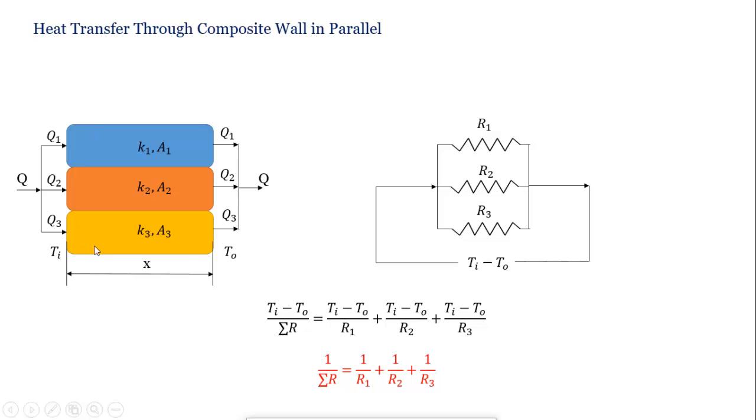When we have walls in parallel then we use this type of equation: 1 upon Sigma R equal to 1 upon R1 plus 1 upon R2 plus 1 upon R3.